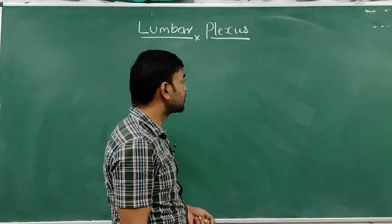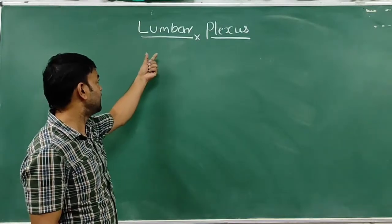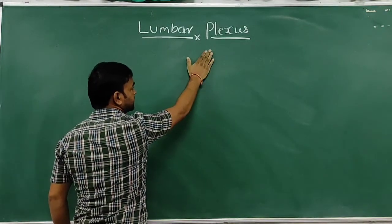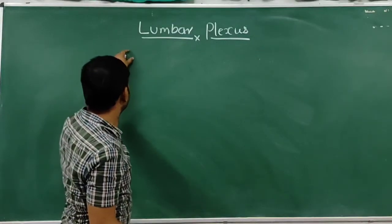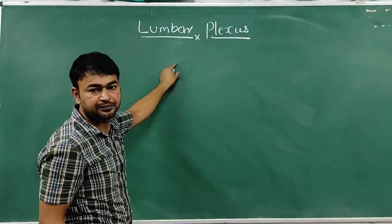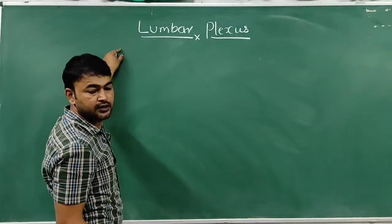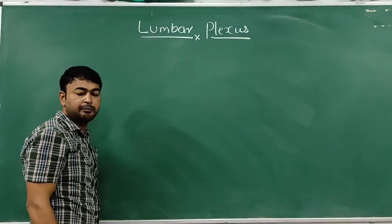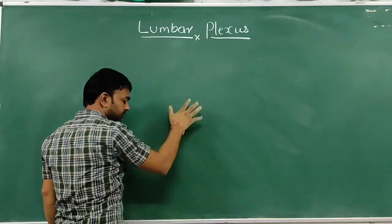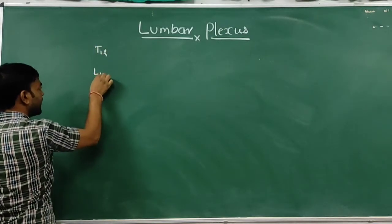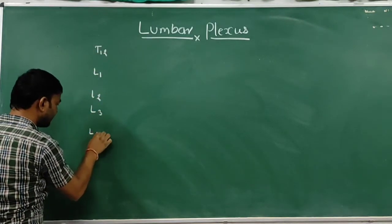Hello friends, good morning. Today's topic is the lumbar plexus — the neural complex of the lumbar nerves, or the ventral rami of the lumbar nerves, formed by the lower thoracic and the lumbar nerves which supply the lower limb and the pelvic region.